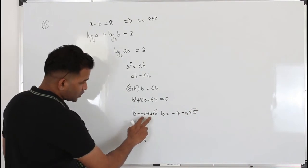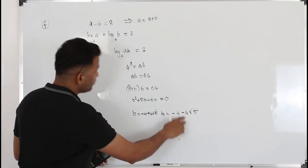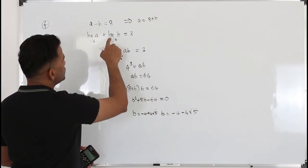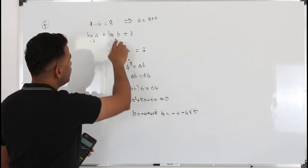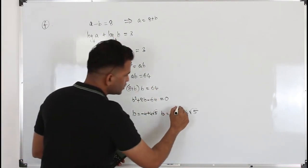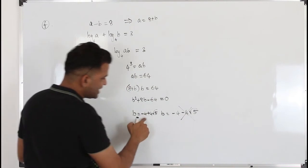So you see this is a positive number. This is a negative number. Since logarithmic function is involved, b cannot be a negative number. So just ignore this. Only take this value.